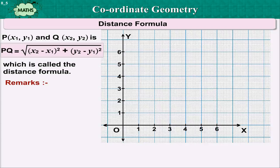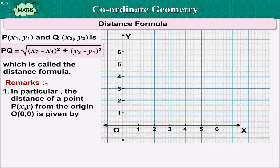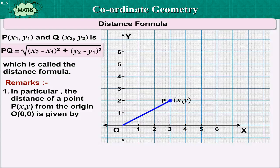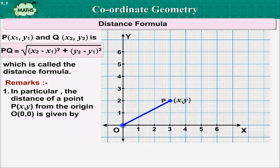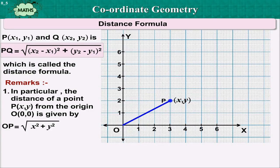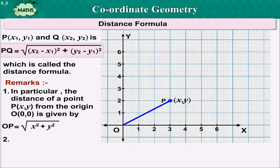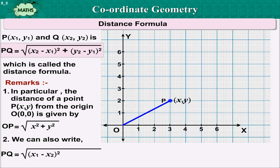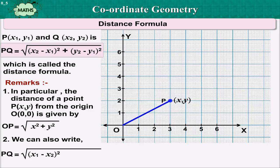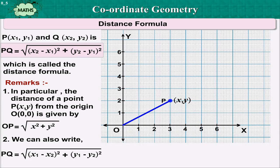Remarks. 1. In particular, the distance of a point P from the origin O is given by OP is equal to square root of x square plus y square.